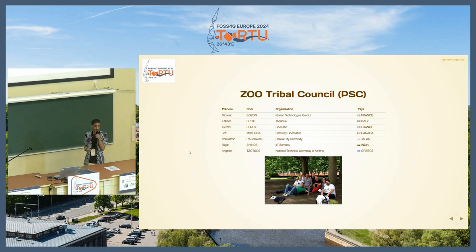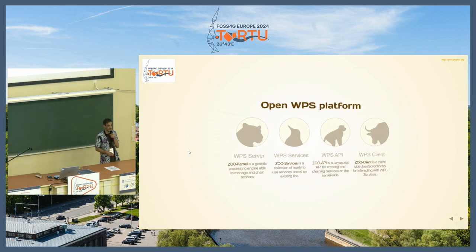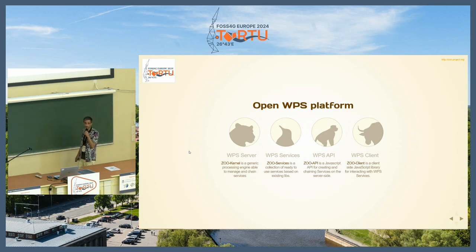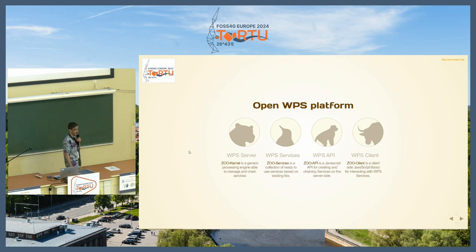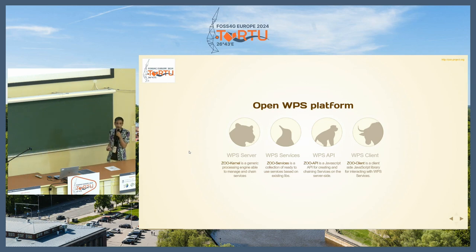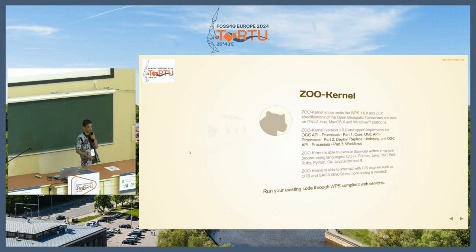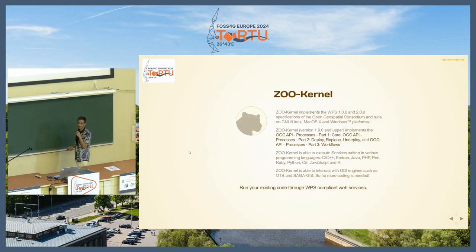This is the PSC of the zoo project. I would like to thank Fabrice Brito from TerraDue Italy who has joined the zoo project PSC recently. This is an overview of the open WPS platform as we named it. We have the zoo kernel which is a WPS server responsible to interact with your service and execute it. We have the zoo API which is a JavaScript API running server-side, giving you the opportunity to create a chain of processes including logic inside the chain. And then we have the WPS client, which is now somewhat obsolete as we are using OGC API Processes in many places.